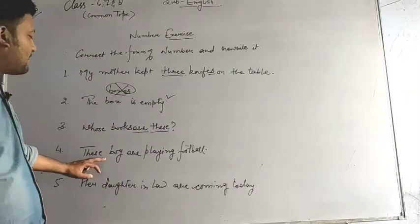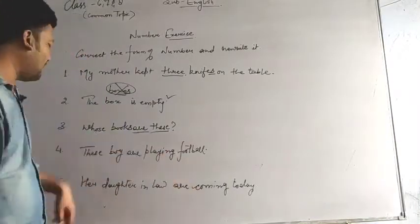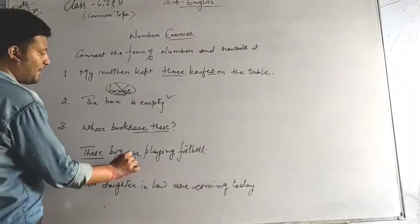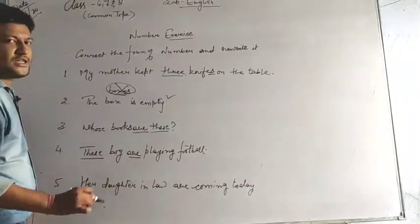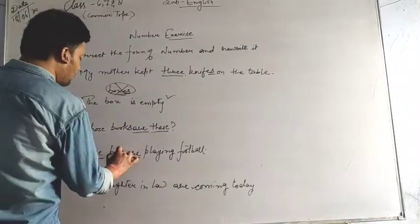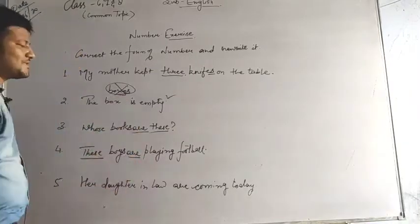Next: these boy are playing football. Again same thing. 'These' is given which is the plural form of 'this' and 'are' is also there which we use with the plural. So boy becomes boys and the sentence is grammatically correct.